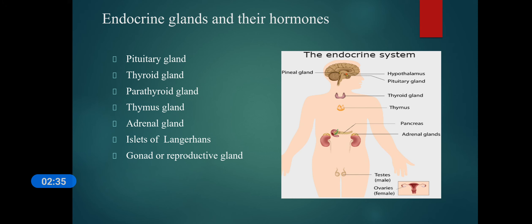The functions of the endocrine system include controlling all our moods, growth, development, metabolism, and reproduction. These are the main functions of the endocrine system. Everything that occurs in our body happens because of these endocrine glands and their hormones.